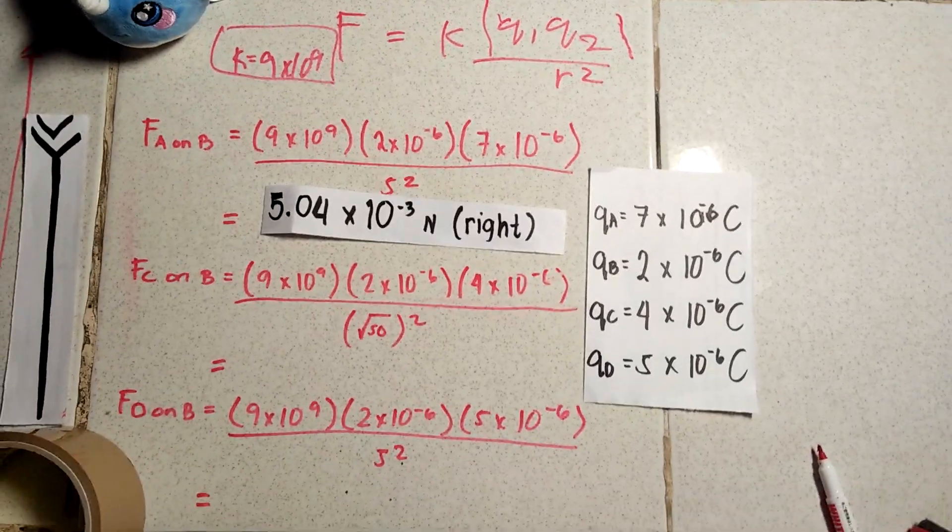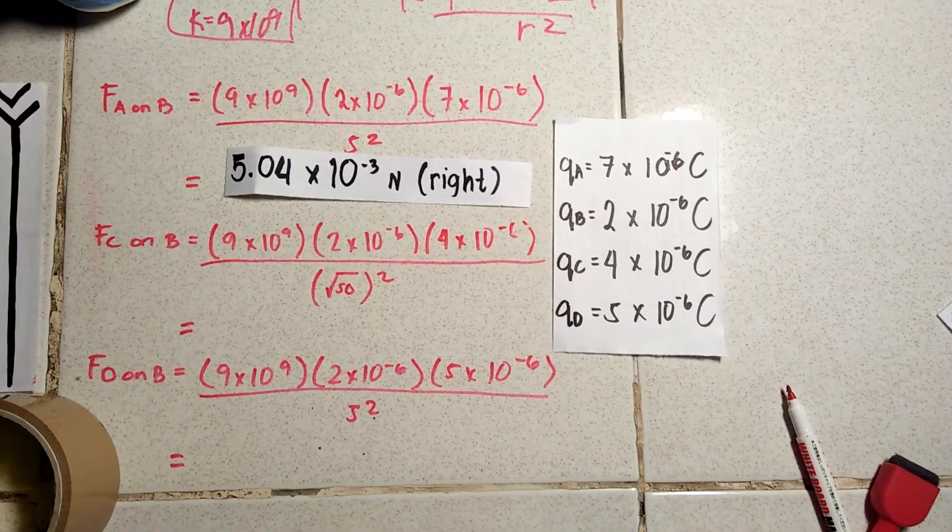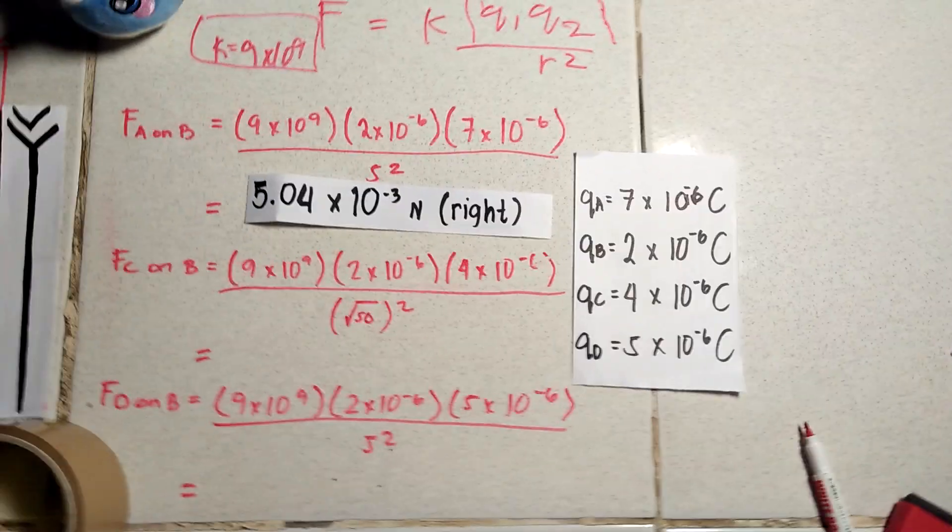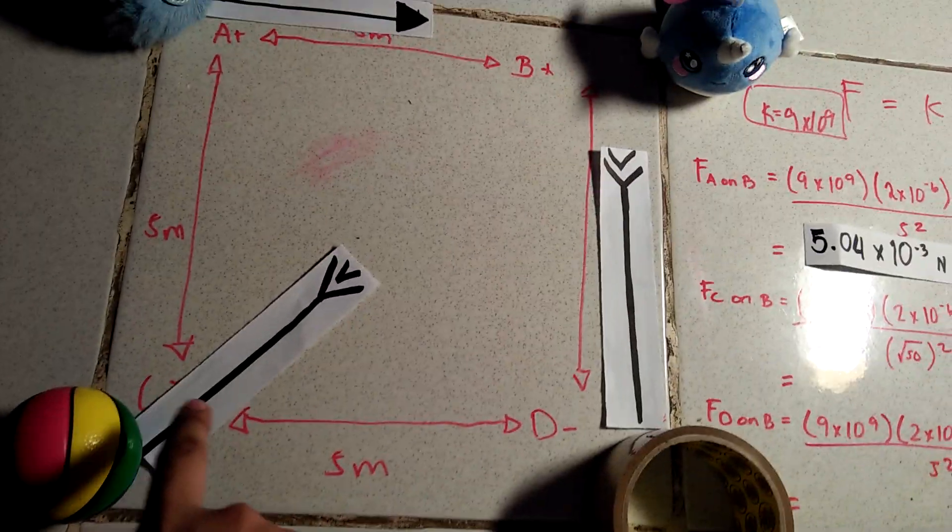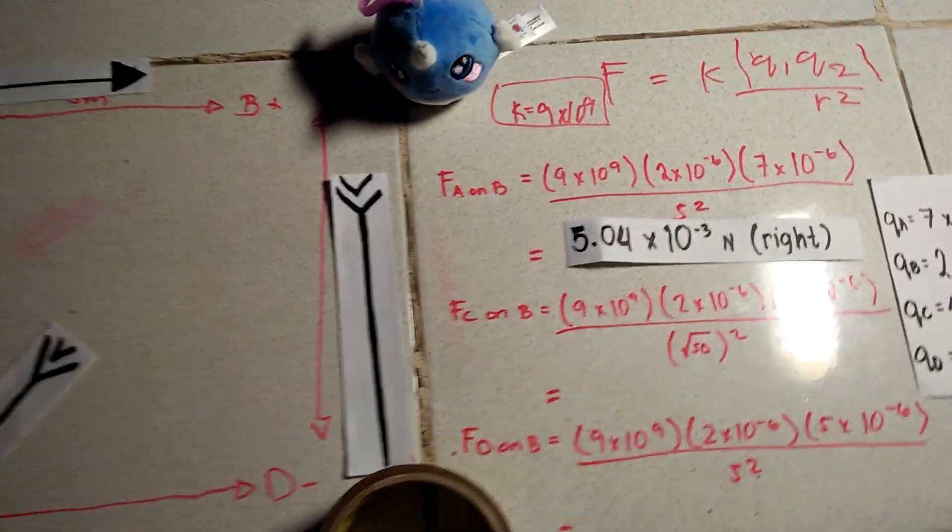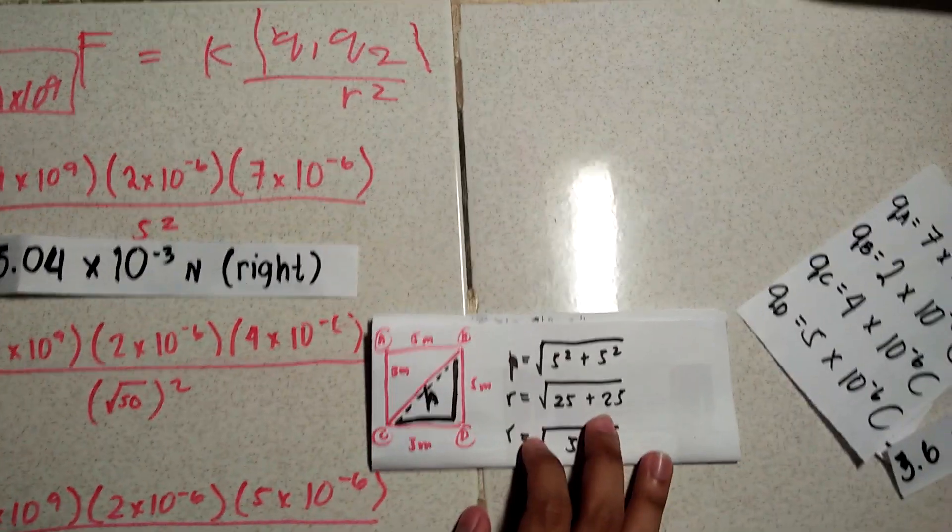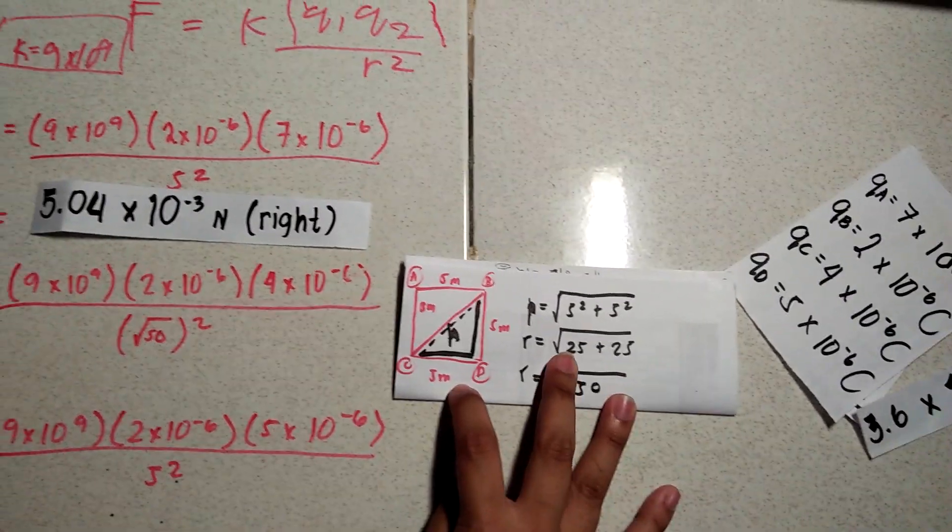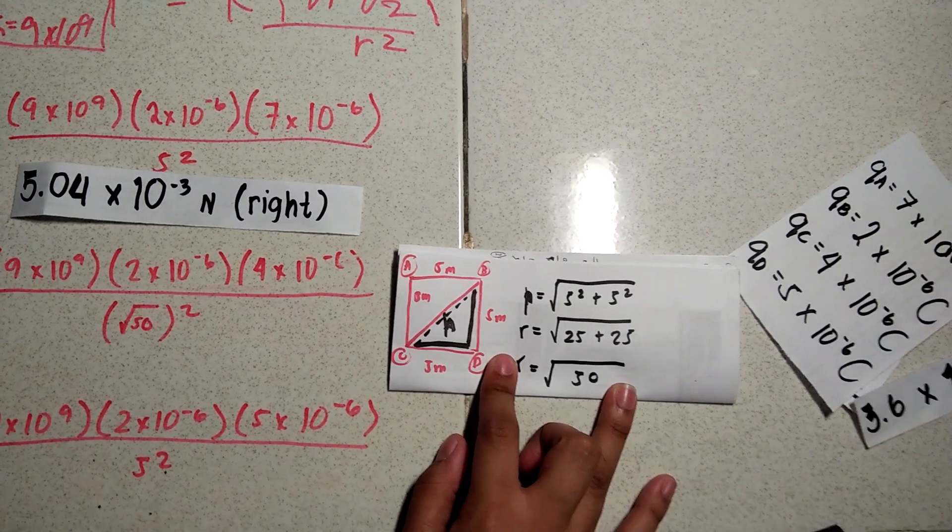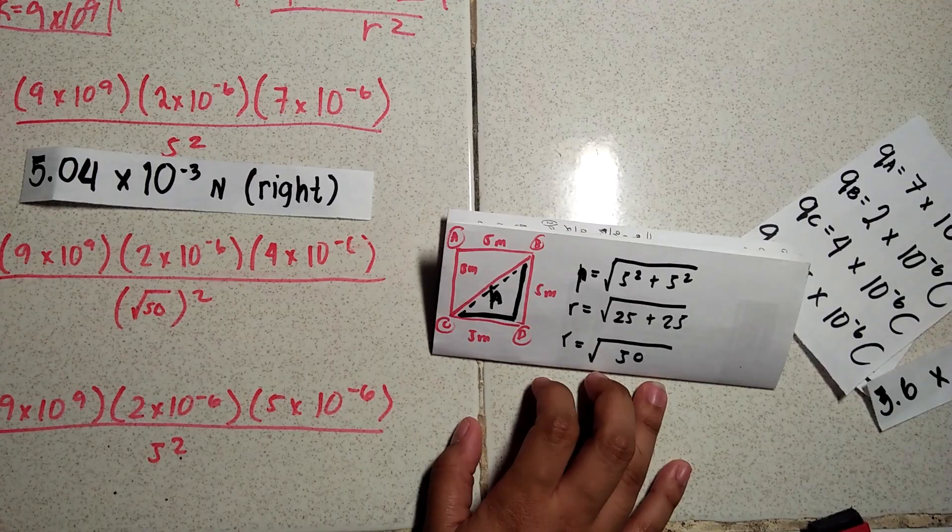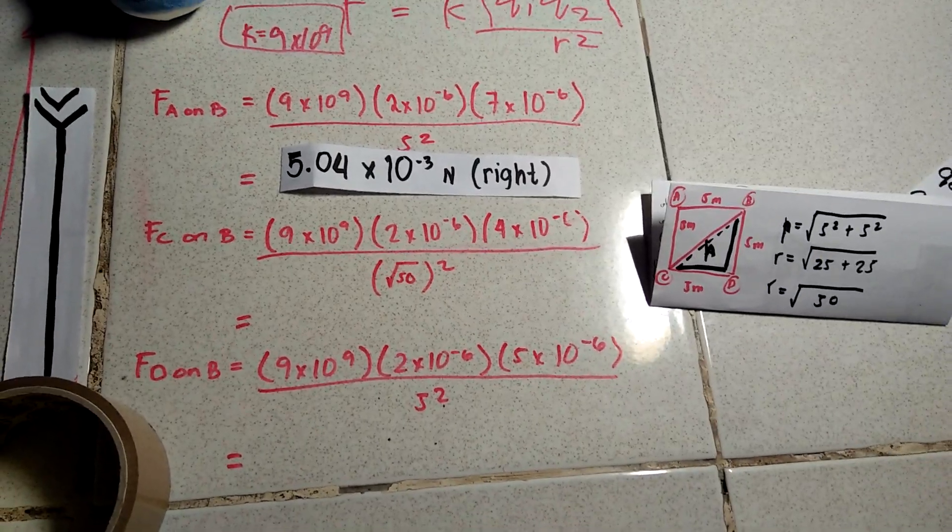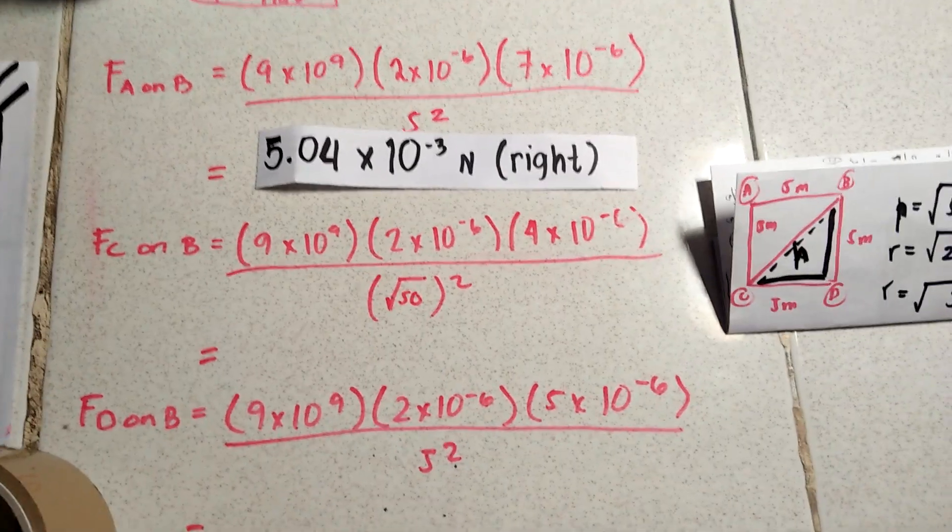Next is C on B. Now if you notice, the radius for C on B is not 5 squared, but instead square root of 50 squared. Because going back here, C to B is a hypotenuse. So what we did here is, since the legs from C to the hypotenuse is 5 and 5, we could just, radius is equivalent to 5 squared plus 5 squared, square root of all that, that's square root of 50. So that's the value of R. And R, you just square. So that's basically dividing everything by 50.